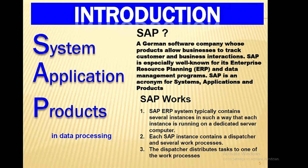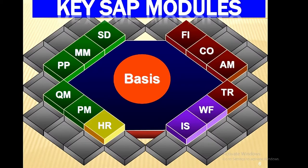SAP is a German software company whose products allow businesses to track customer and business interactions. SAP is especially well known for its Enterprise Resource Planning (ERP) and Data Management programs. The SAP ERP system typically contains several instances, where each instance runs on a dedicated server computer. Each SAP instance contains a dispatcher and several work processes; the dispatcher distributes tasks to one of the work processes.